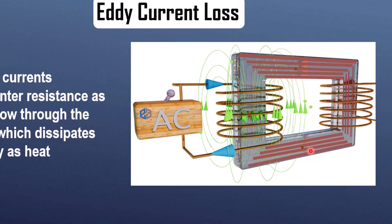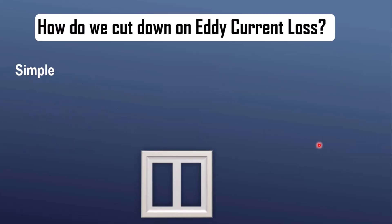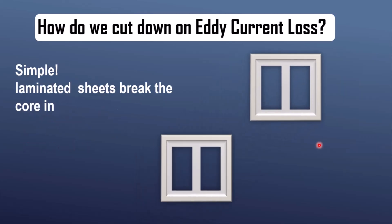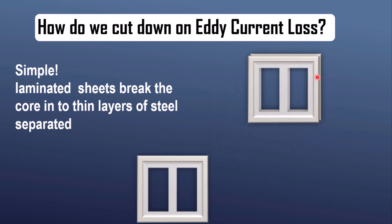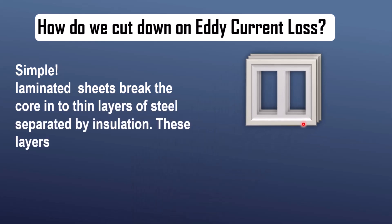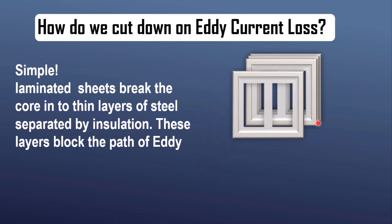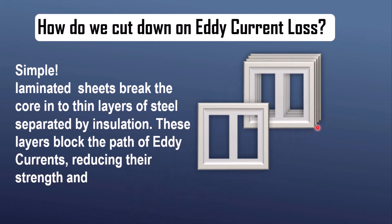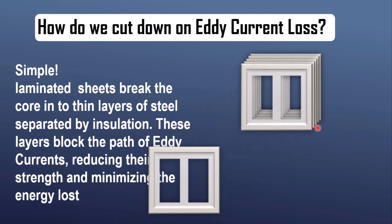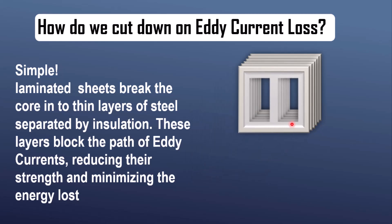To minimize eddy current losses, we use laminated sheets to construct the transformer core. These laminations break the core into thin layers of steel, each separated by a layer of insulating material. This insulation blocks the flow of eddy currents between layers, forcing them to circulate in smaller, confined paths. As a result, the strength of the eddy currents is greatly reduced, and energy loss in the form of heat is minimized.